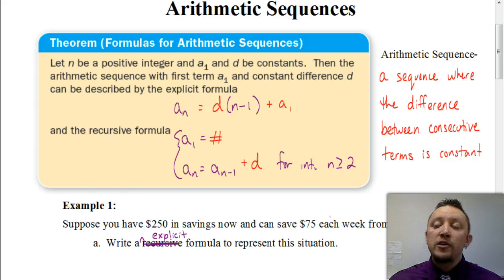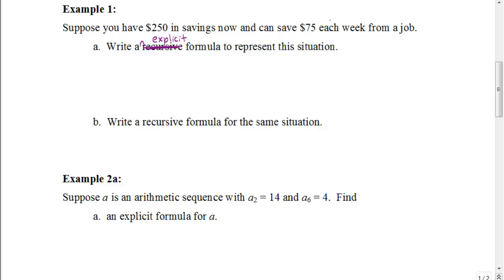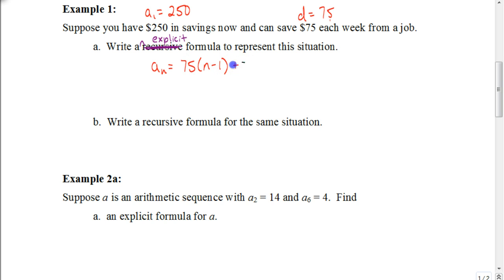Let's look at some examples using these two formulas. Suppose you have $250 in a savings account and can save $75 each week from a job. We need to write an explicit formula to represent the situation. First we determine our first term and constant difference. The fact that we're saving $75 each week tells us our constant difference is $75. Starting with $250 tells us our first term is $250. So our explicit formula is a-sub-n equals 75 times (n minus 1) plus 250.